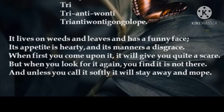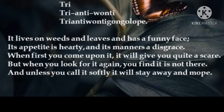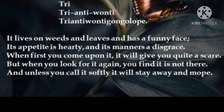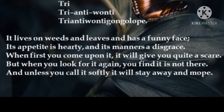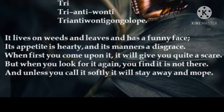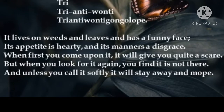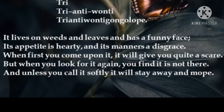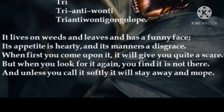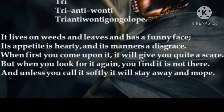When first you come upon it, it will give you a quiet scare. Means when the first time you look at it, at the very first meeting with the insect, it will give you a quiet scare — it will look at you in such a way that you will get a little scared and shocked. But when you look for it again, you will find it is not there. And unless you call it softly, it will stay away and mope — meaning unless you call it very softly with love and affection, it will be hiding somewhere, being shy. So to call that insect out, you will have to call its name very sweetly, very lovingly. So try, Tri-Anti-Wanty-Gonglop.